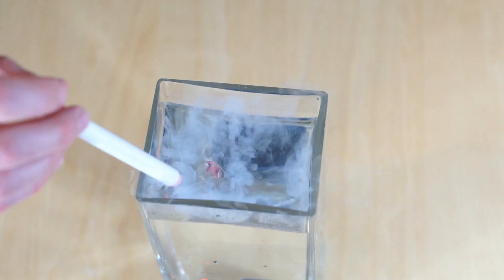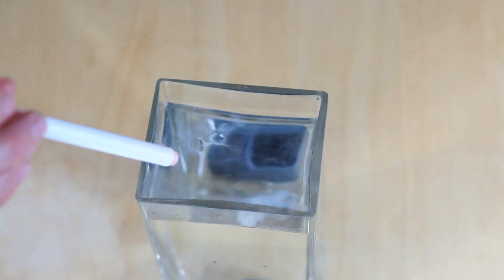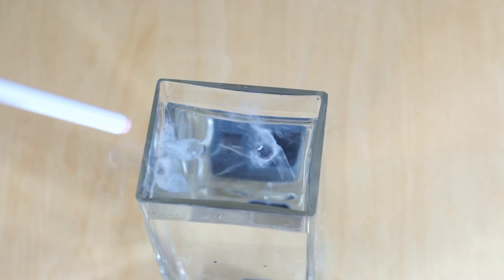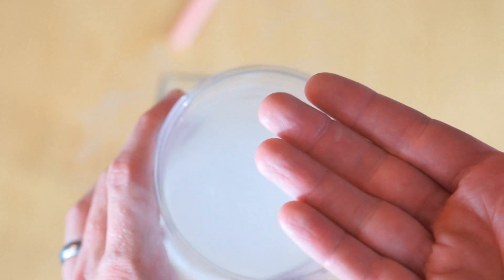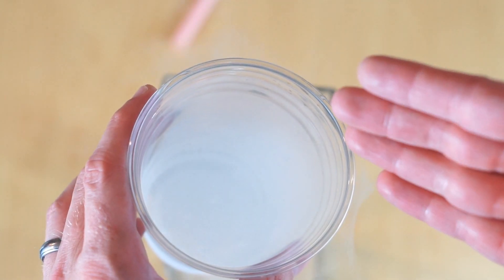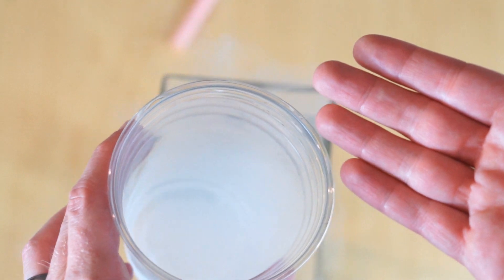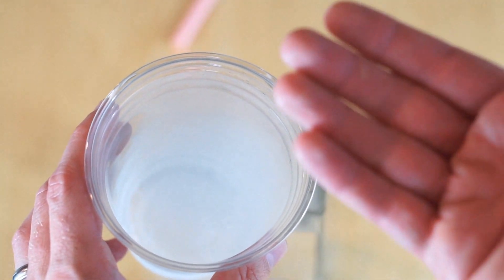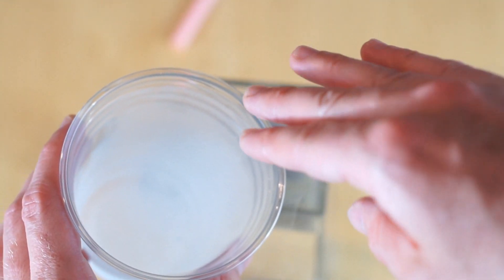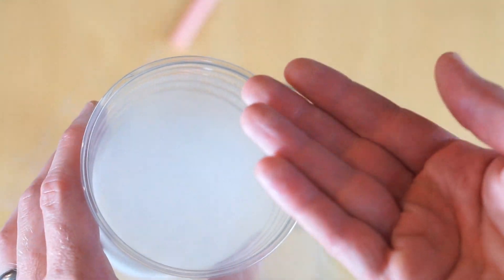So this effect of something cold floating on a pocket of gas over something hot is called the Leidenfrost Effect. So the reason I can dip my finger in liquid nitrogen and be fine is also because of the Leidenfrost Effect, because it creates a pocket of nitrogen gas around my fingers that insulates it from the cold.